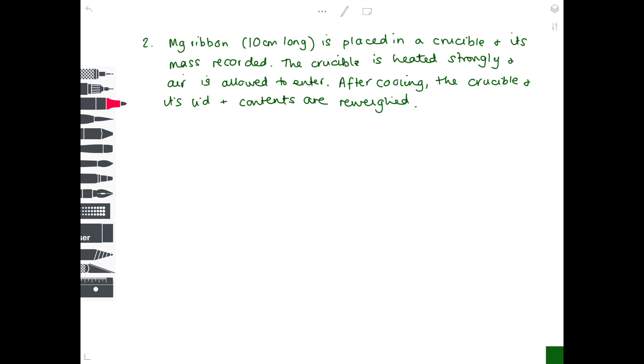So a slightly more complicated example in question 2, but it still remains similar, the methods you need to use. Magnesium ribbon, 10 centimeters long, is placed in a crucible and its mass recorded. The crucible is heated strongly and air is allowed to enter. After cooling, the crucible and its lid and contents are re-weighed. Let's make sure we're clear of what's happened here. Because we've got magnesium and it's being burnt in air, we know that we're going to be producing magnesium oxide. And indeed, that's the formula we're after.